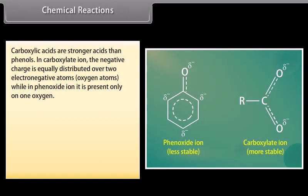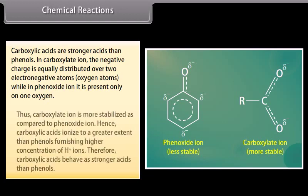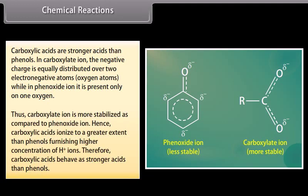Carboxylic acids are stronger acids than phenols. In the carboxylate ion, the negative charge is equally distributed over two electronegative oxygen atoms, while in the phenoxide ion, it is present only on one oxygen. Thus, the carboxylate ion is more stabilized as compared to the phenoxide ion. Hence, carboxylic acids ionize to a greater extent than phenols, furnishing a higher concentration of hydrogen ions. Therefore, carboxylic acids behave as stronger acids than phenols.